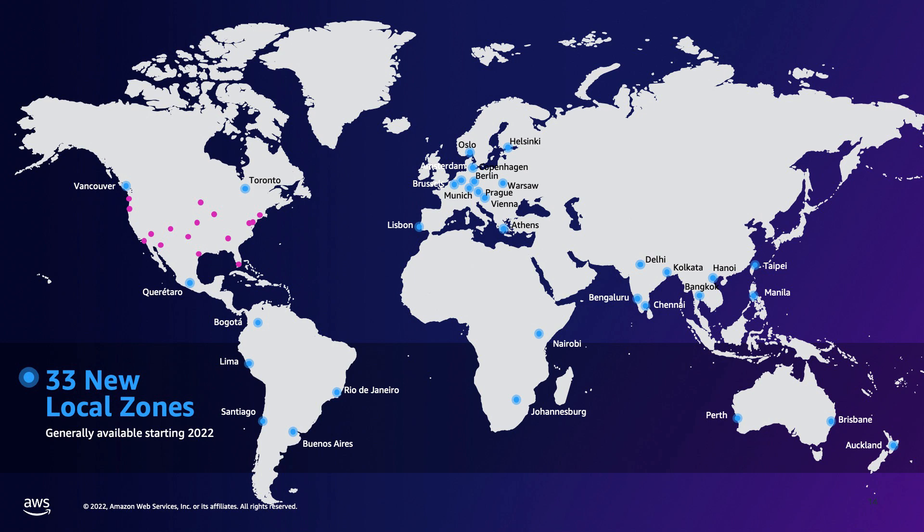Since we announced Local Zones at re:Invent in 2019, we've launched 17 Local Zones in the US. As of July 2022, we're getting ready to launch Local Zones in 27 countries across the globe starting this year into next year, expanding to 33 metros globally in the next 18 months. The overall goal is to replicate what we did in the US and allow customers to deliver a single-digit millisecond latency experience to end users across the globe. We're also working on additional features and services to make it even simpler for customers to extend their applications to more locations.